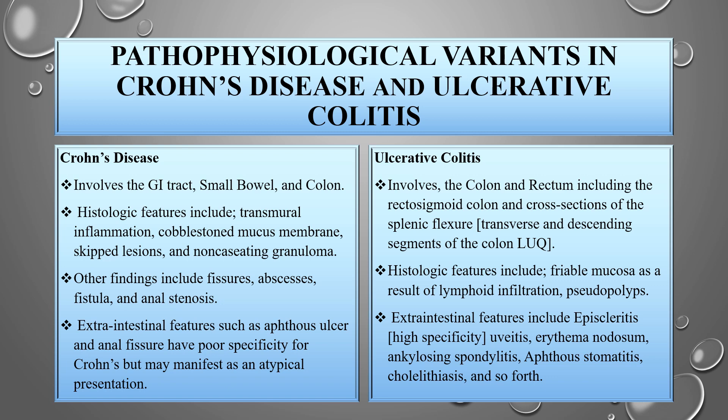Crohn's disease involves the GI tract, small bowel, and colon. Histologic features include transmural inflammation, cobblestone mucous membrane, skip lesions, and non-caseating granuloma. Other findings include fissures, abscesses, fistula, and anal stenosis.